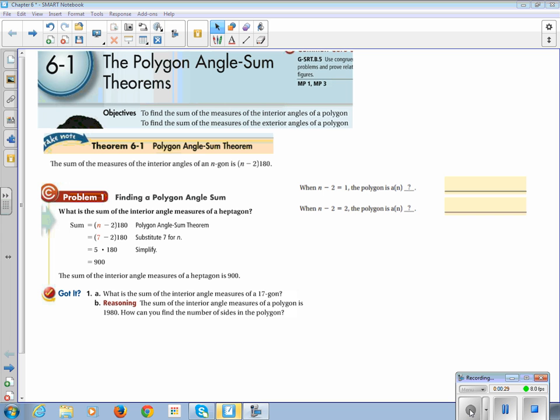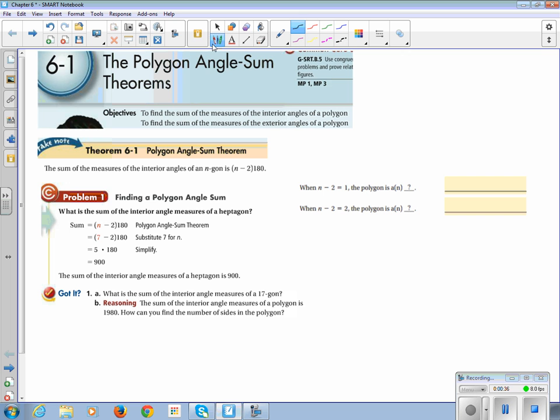So theorem 6-1 is the Polygon Angle Sum Theorem. Please get out your highlighters. And let's highlight the sum of the measures of the interior angles is n minus 2, so how many sides you have, subtract it from 2, multiply by 180. So when n minus 2 equals 1, if I were to add 2 to both sides, this would be n equals 3. The polygon is a what? What has three sides, y'all? Triangle.